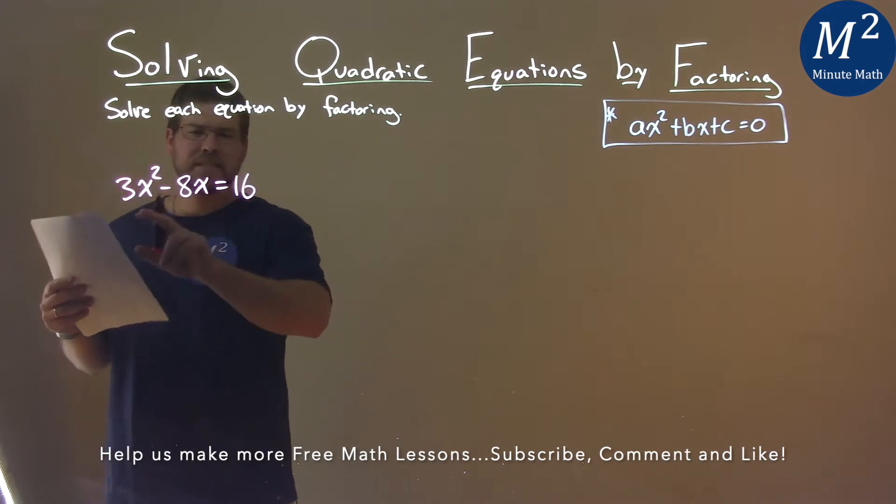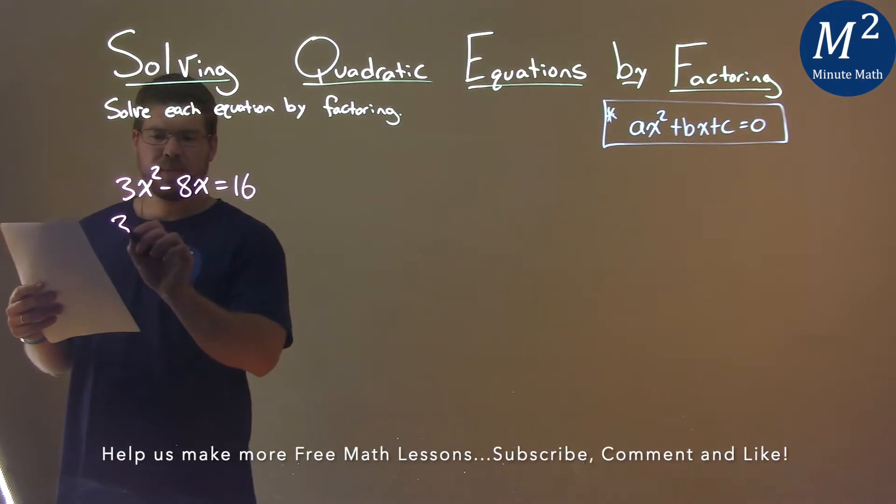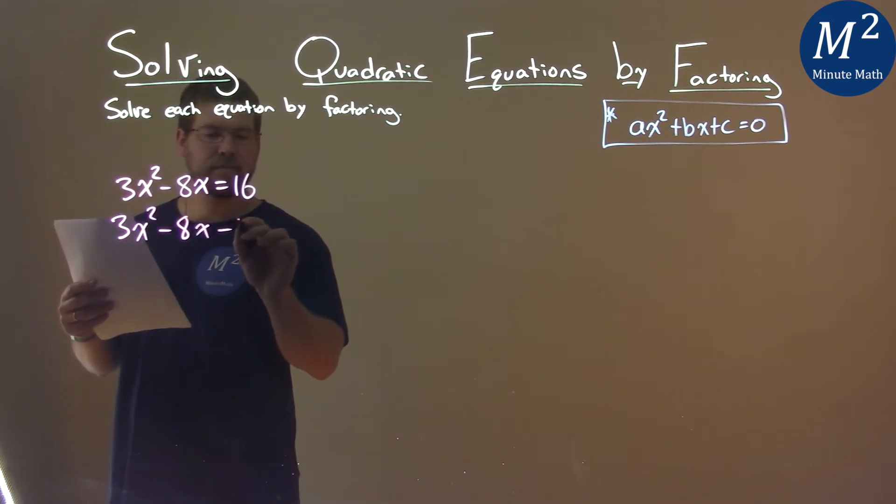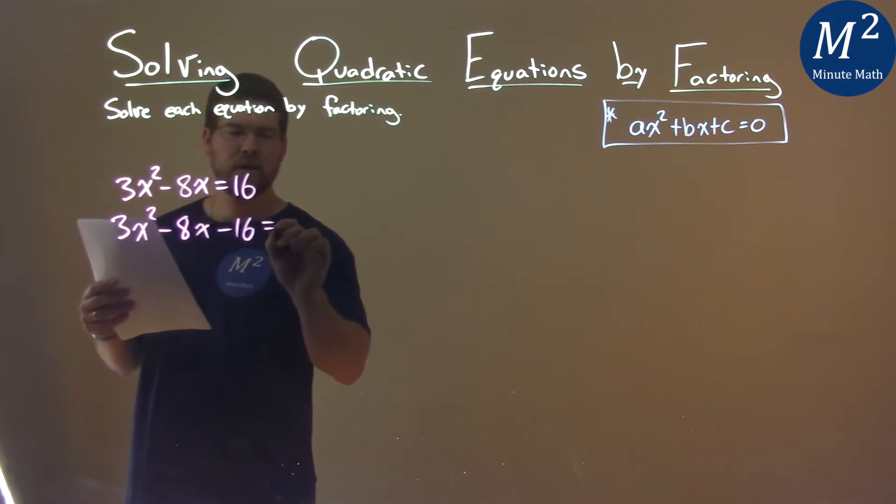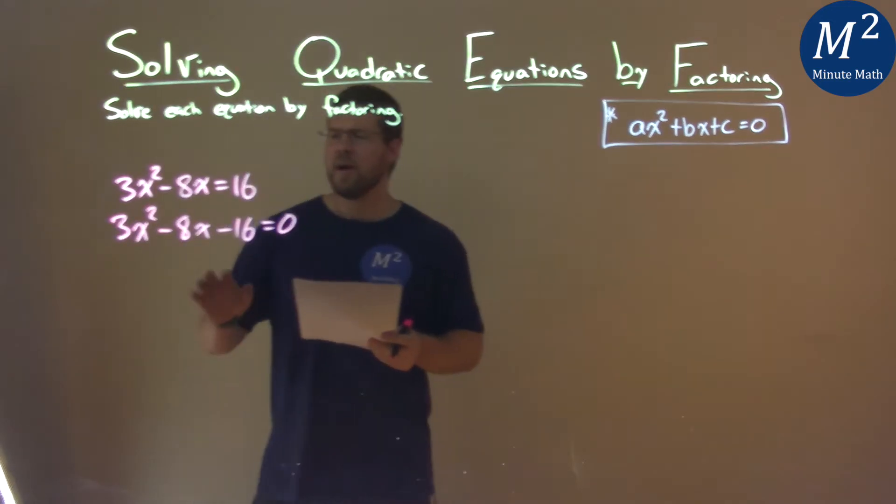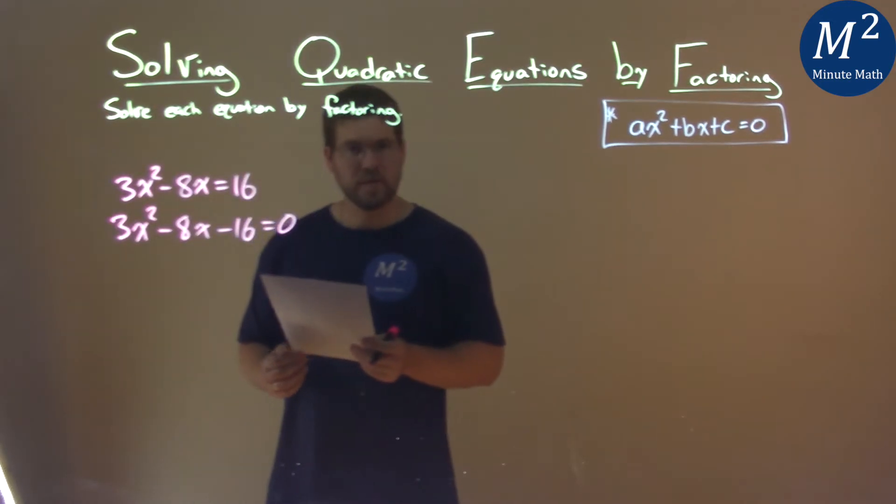I'm going to bring the 16 over to the left-hand side. So we have 3x squared minus 8x, and if I subtract the 16, I have a minus 16 here on the left. Equals 0 on the right. I now have a quadratic equal to 0. Let's factor it.